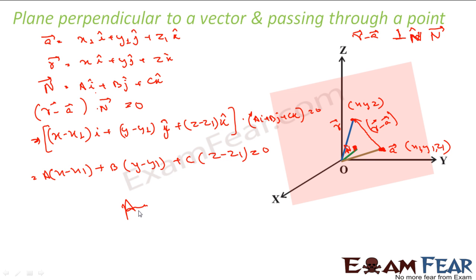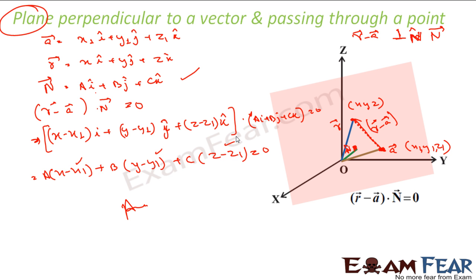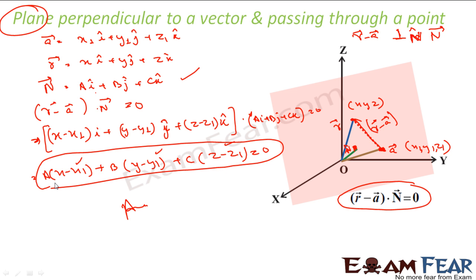This is the equation of the plane perpendicular to vector n — where n is a·i + b·j + c·k — and passing through point (x1, y1, z1). The vector form is: (r − a)·n = 0. The Cartesian form is: a(x − x1) + b(y − y1) + c(z − z1) = 0. You can use either form as needed.